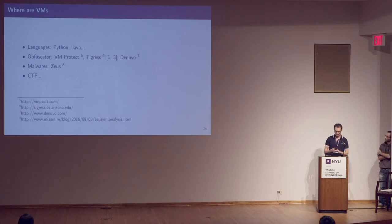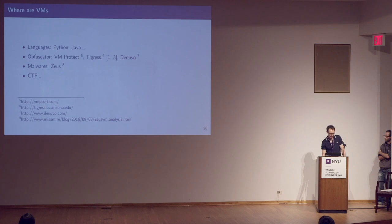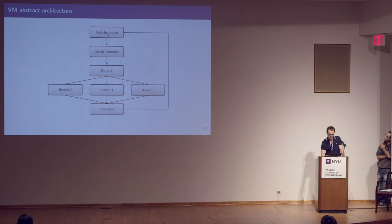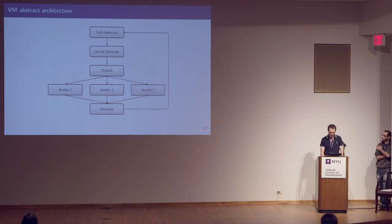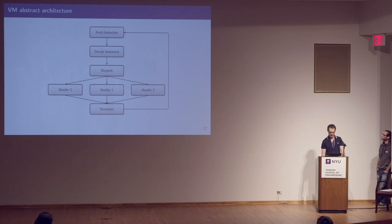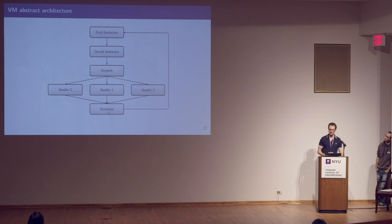We find this kind of VM in languages like Python, but also in commercial obfuscators like VMProtect or Denuvo. There is also Tigress, which is an academic obfuscator. In malware, this kind of obfuscation is used because malware doesn't want to be analyzed. You can also find this in CTF challenges. The abstract architecture of a VM consists of: a fetch instruction block that fetches instructions from memory or file; a decode block that splits the instruction into operands and opcode; a dispatch block that routes to the right handler; the handlers which implement the transformations; and a terminator that stops or continues VM execution.